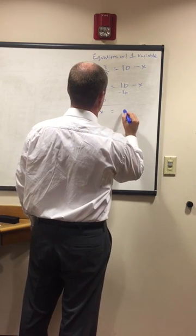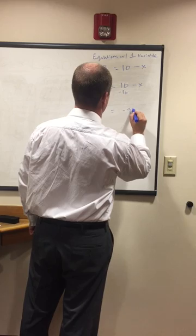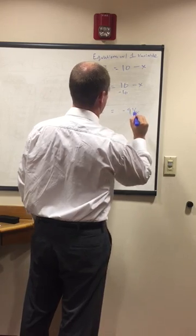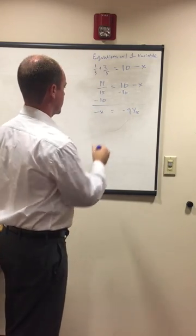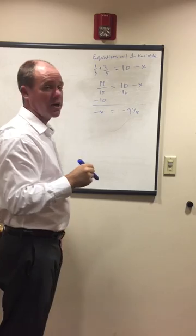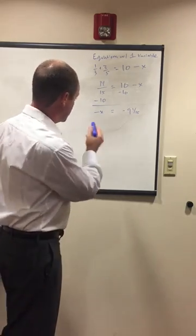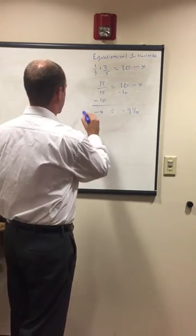And then we have negative 9 and 1-fifteenths. That's what that is when we subtract 10 from it. We get negative 9 and 1-fifteenths. Not done yet, though. We still have this negative x. We need to get that positive.